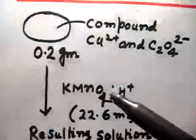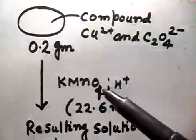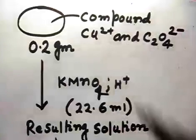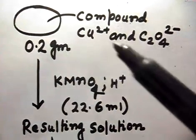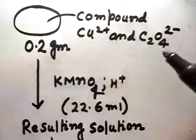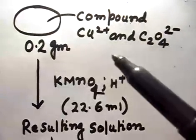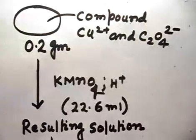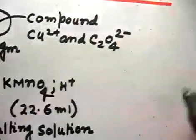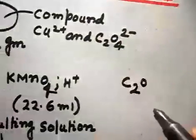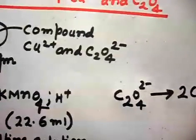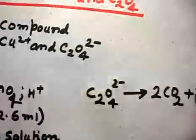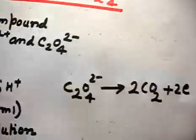How do we proceed? Initially we have Cu²⁺ and C₂O₄²⁻. The oxidizing agent KMnO₄ is added. Since Cu²⁺/Cu³⁺ conversion is less likely, only C₂O₄²⁻ gets oxidized in the first reaction. The balanced half-reaction is: C₂O₄²⁻ → 2CO₂ + 2e⁻.